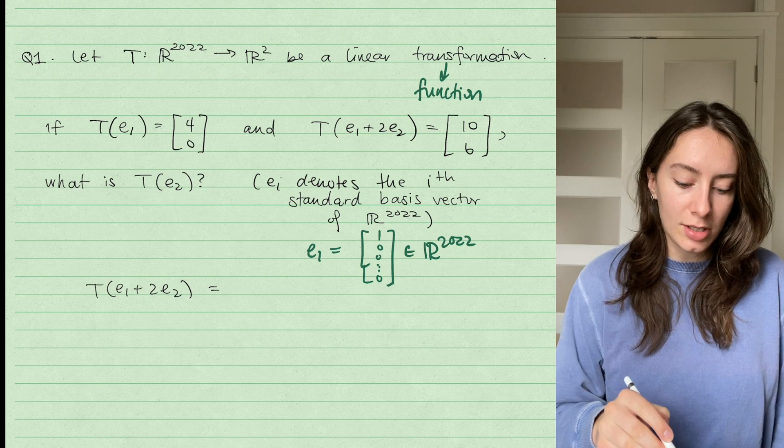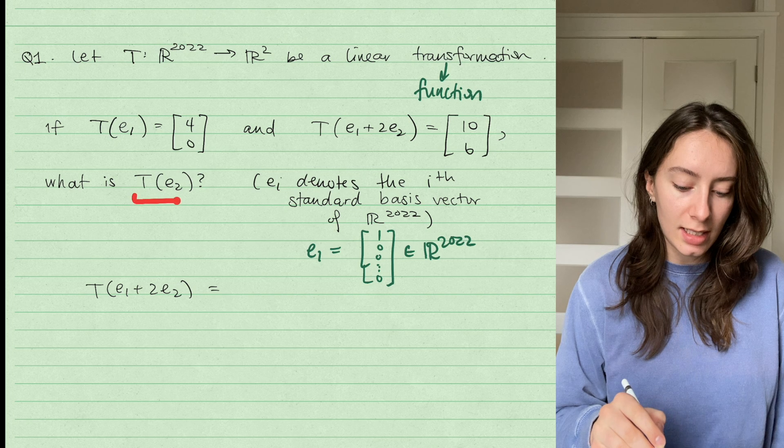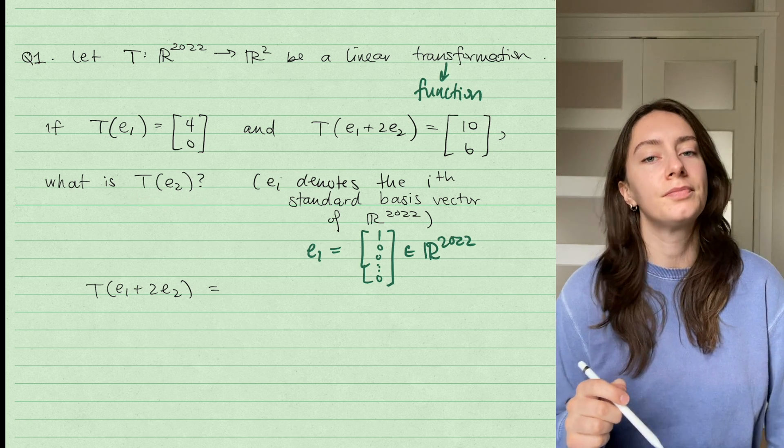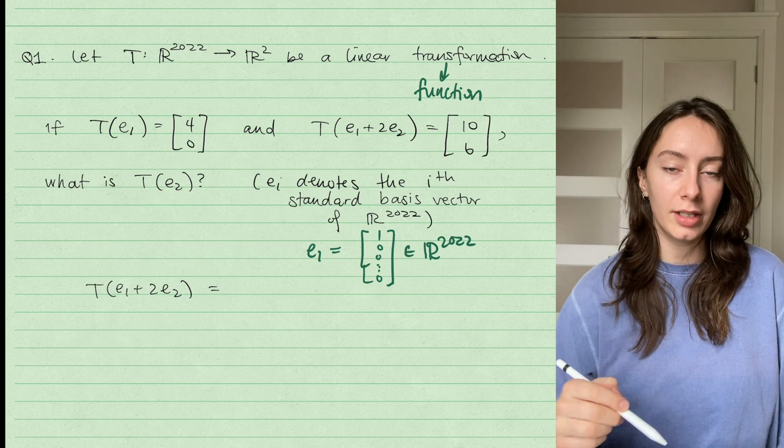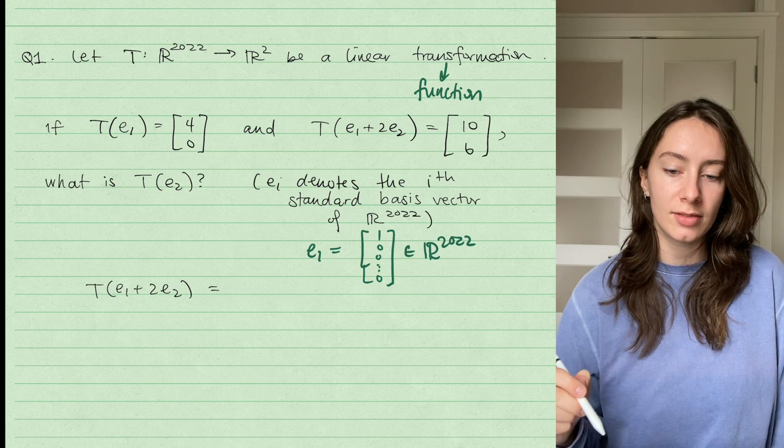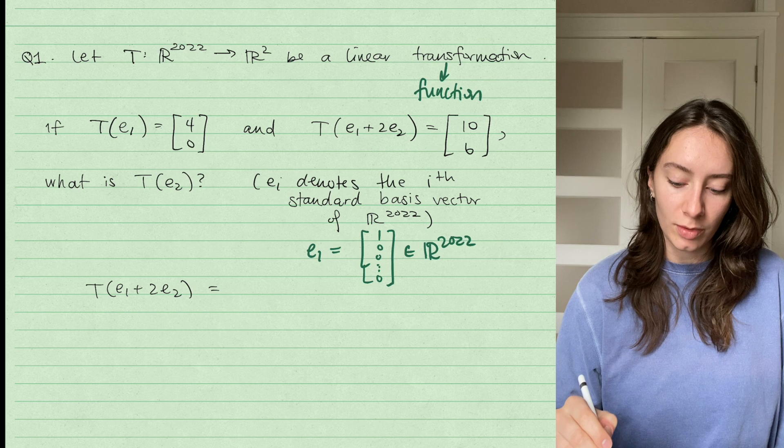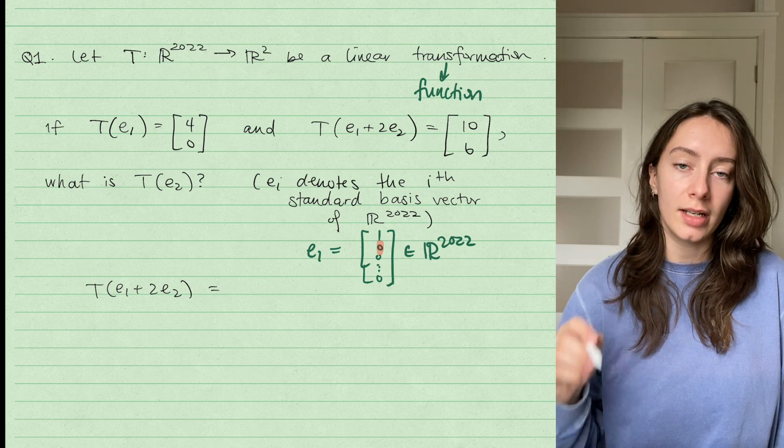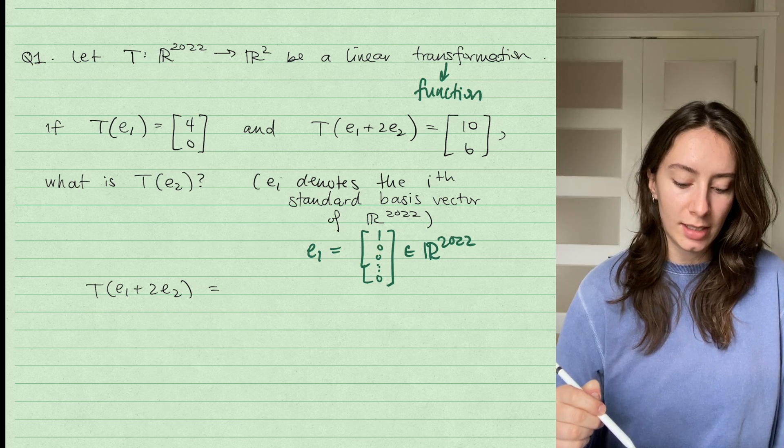So we have two pieces of information about where our linear transformation takes certain specific vectors in R^2022. And now the question is asking what is T(E_2)? So where will the linear transformation take the vector E_2, the second standard basis vector E_2 would be the vector with a 1 in the second entry and zeros everywhere else.